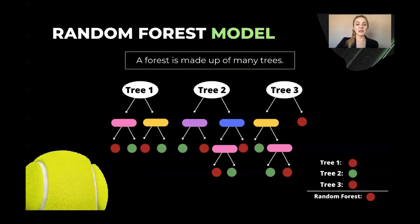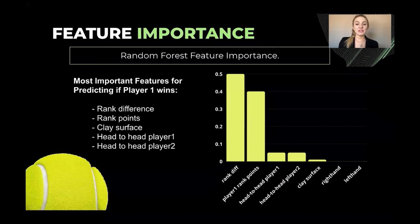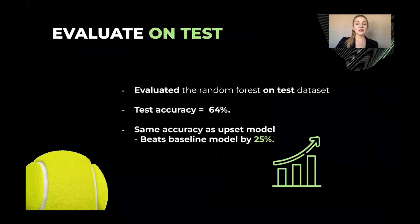I'll now explain how our model works. A random forest model is made up of many decision trees. In classification modeling, the objective is to determine which class an observation fits into. To do this, a decision tree chooses the features that affect the target the most and asks true and false questions until a conclusion is reached. Many decision trees use random features and samples to make up the random forest model. After each tree has come to its conclusion, the model selects the most common outcome amongst all the trees as the final decision for the random forest model. The features that our model found to be the most important in predicting player one wins were rank difference, rank points, clay surface, and head-to-head for players one and two. Finally, to test our best model on unseen data, we evaluated the random forest on the test data set. Our model predicts the winner accurately 64 percent of the time. This is the same accuracy as our no-upset model but beats our baseline by 25 percent. Alejandro will now wrap up the presentation with our conclusion.